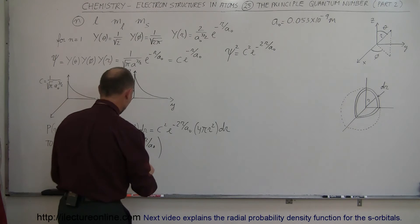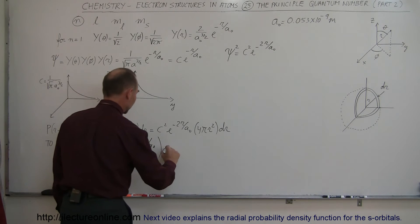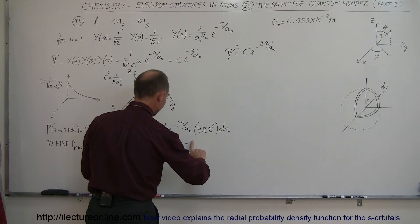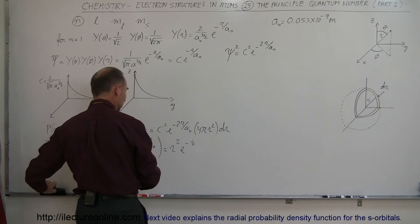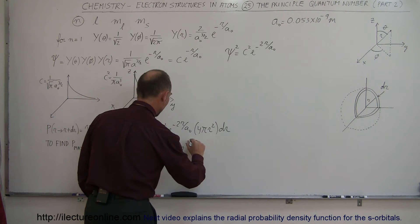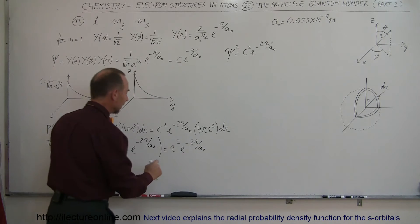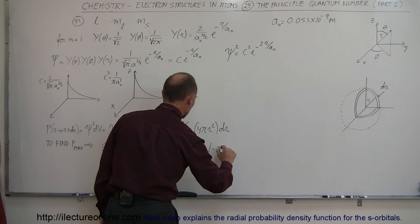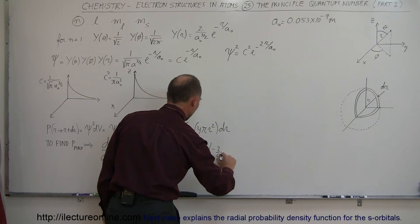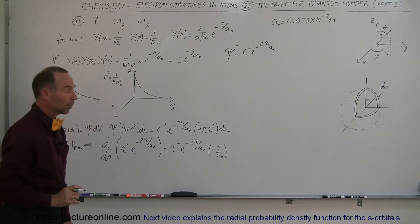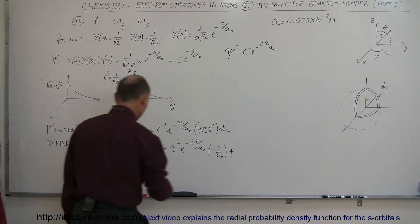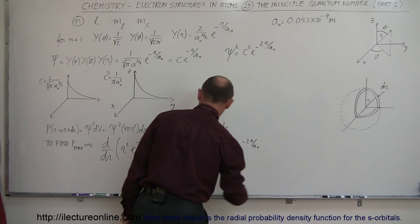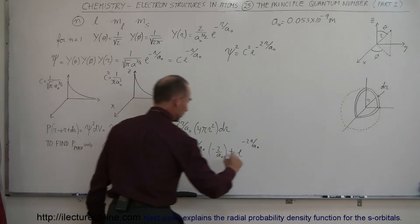We take the derivative of this as a product — so it's the first, r squared, times the derivative of the second, which is e to the minus 2r over a sub-naught times the derivative of the exponent, which equals minus 2 over a sub-naught. Plus the second part, e to the minus 2r over a sub-naught, times the derivative of the first, which is 2r.